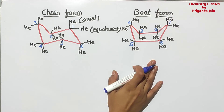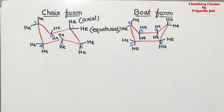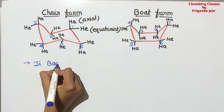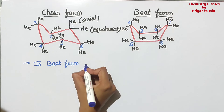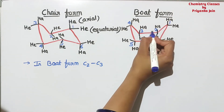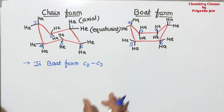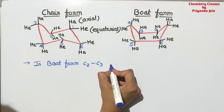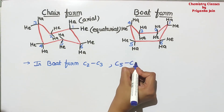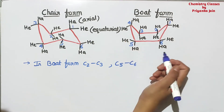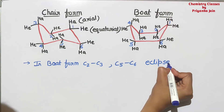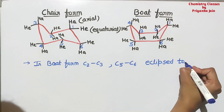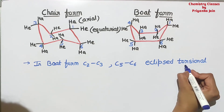The chair form is more stable as compared to the boat form. In the boat form, looking at C2 and C3, the hydrogens are at the eclipsed position — axial-axial are nearer and equatorial-equatorial are nearer, meaning they are in eclipsed positions. Similarly between C5 and C6, the hydrogens are in the eclipsed form. We know whenever there is eclipsed form, there is more strain. So in the case of the boat form, there will be torsional strain — this eclipsed conformation generates torsional strain.